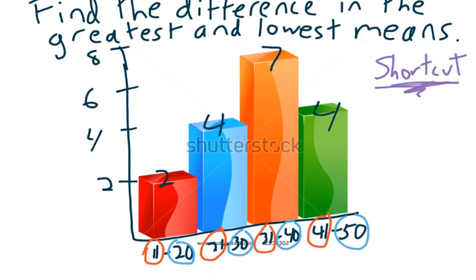All you do for this shortcut is take any one of the histogram bars and look at the range of values. So 50 minus 41. And 50 minus 41, of course, is going to be 9. And 9 is your answer.